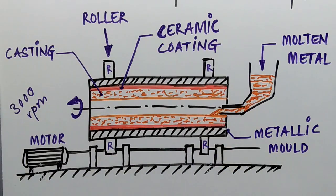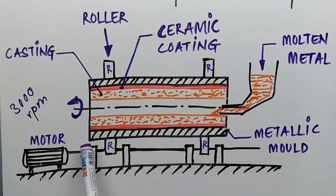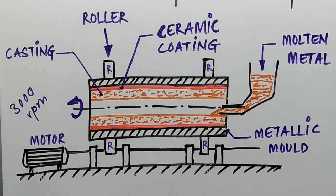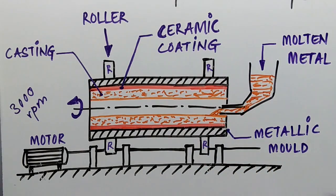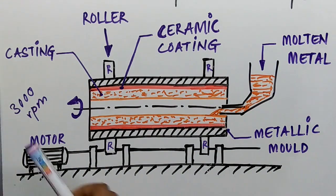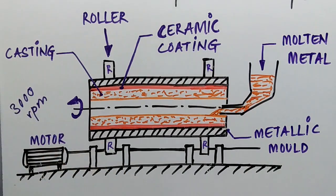We have top rollers and bottom rollers, and a metallic mold which is coated with ceramic. You always coat a metallic mold with ceramic so that the molten metal which enters the mold doesn't stick to the walls. The mold is usually kept rotating at a higher RPM of about 3000.